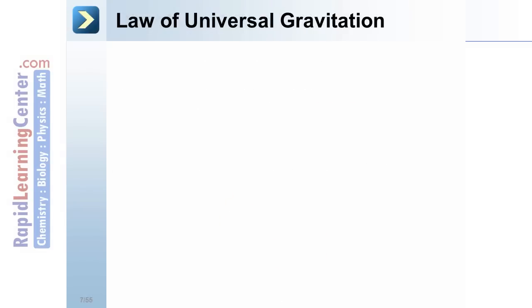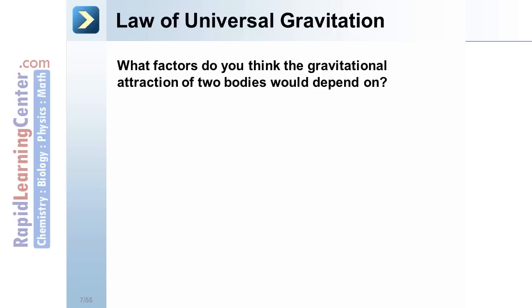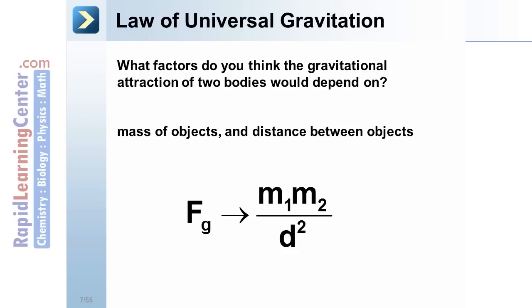Law of Universal Gravitation. What factors do you think the gravitational attraction of two bodies would depend on? Maybe mass of the objects and the distance between the objects. We could say that the force from gravity, F sub g, depends on those two masses and the distance between them squared.